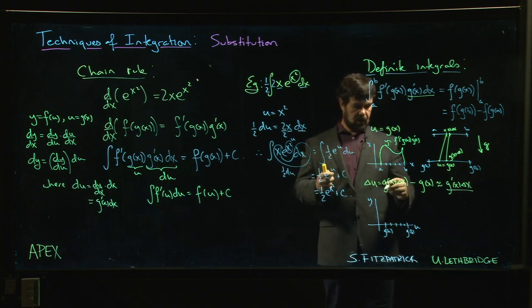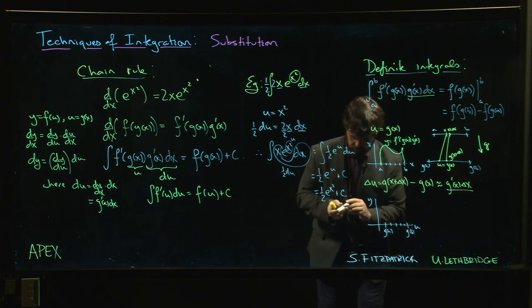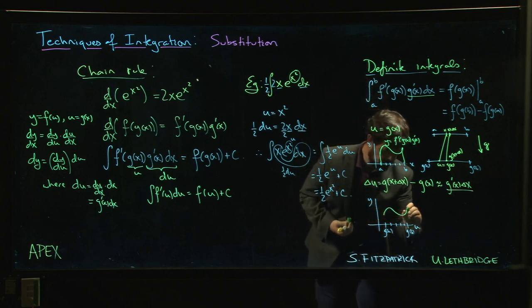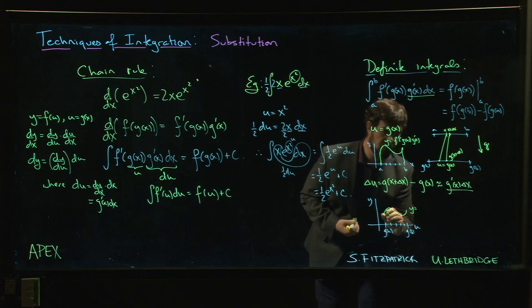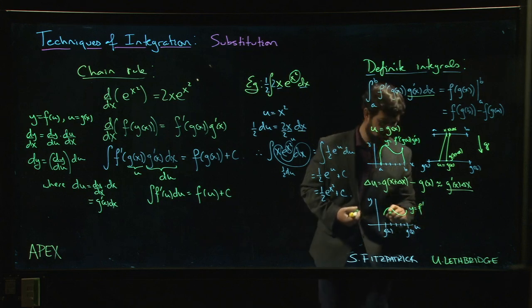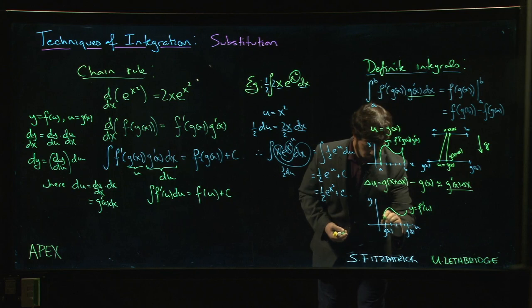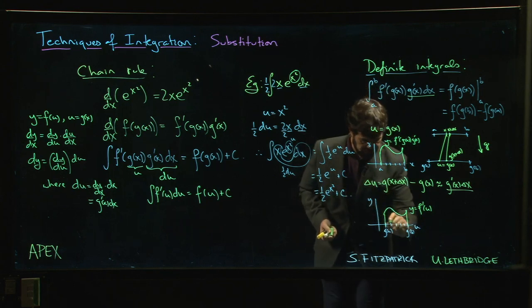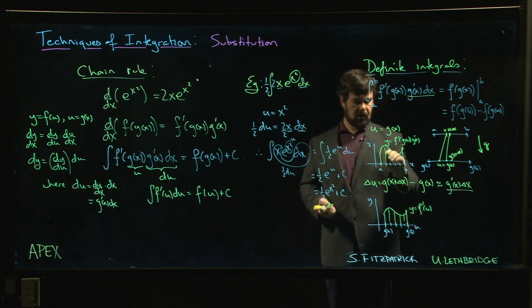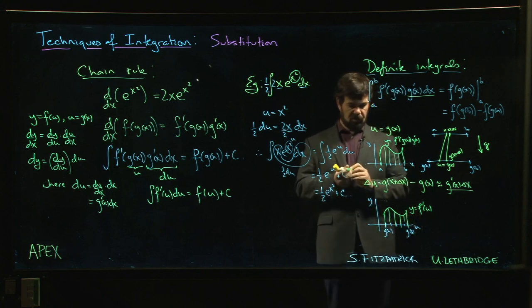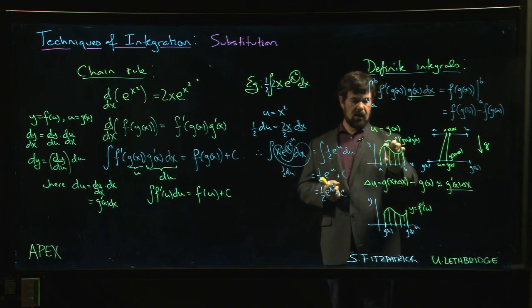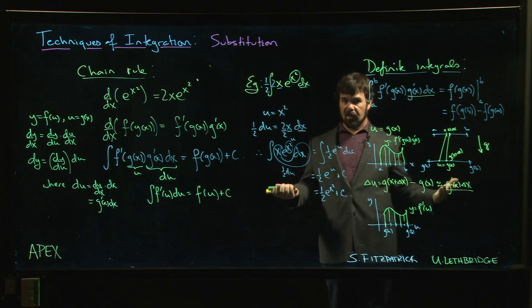And now we've stretched the base of our rectangles by a factor of G prime, so we need to change the height, right? And so what we have here is we're going to have something which is just y equals f prime of u. All right, so each of your rectangles comes out to be the same area as the rectangles that you had up here.